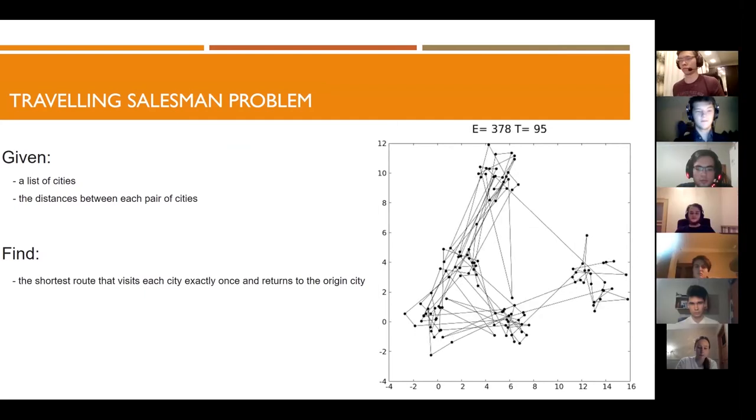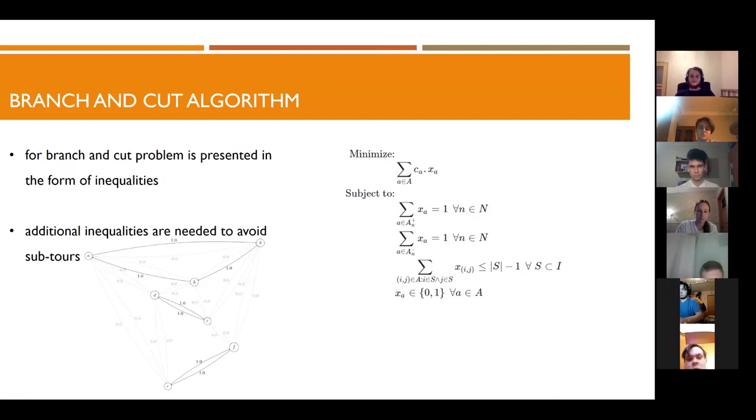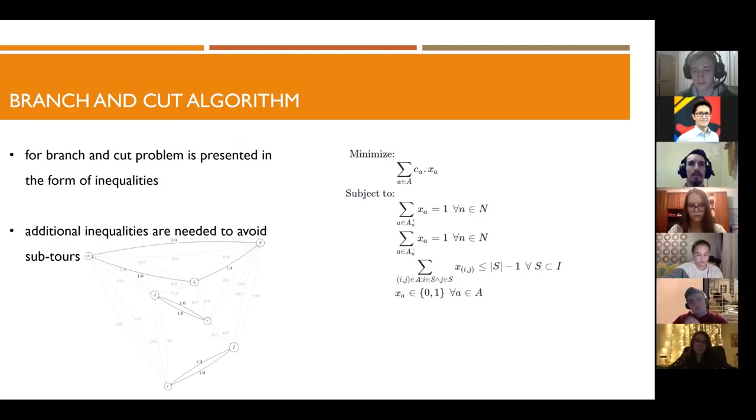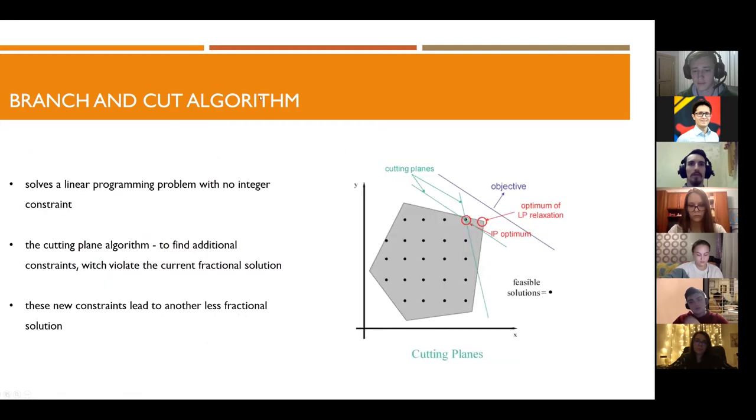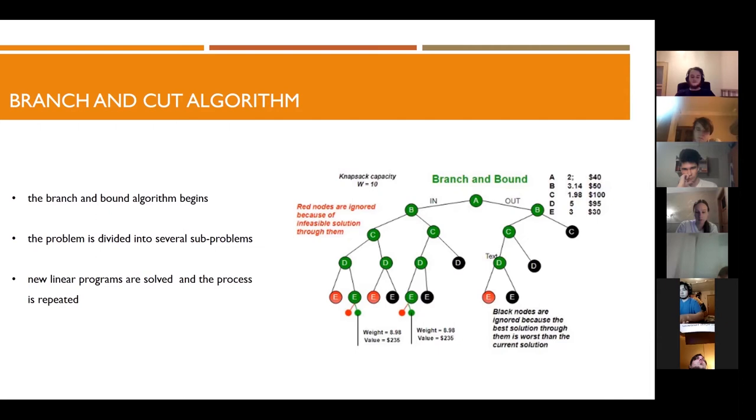So the first algorithm is branch and cut. The problem is presented in the form of a linear programming problem. This method solves the linear programming problem with no integer constraint using the usual simplex algorithm. When an optimal solution is found and the solution has a non-integer value, the cutting plane algorithm starts. It's used to find additional linear constraints which all integer points satisfy but violate the current fractional solution.